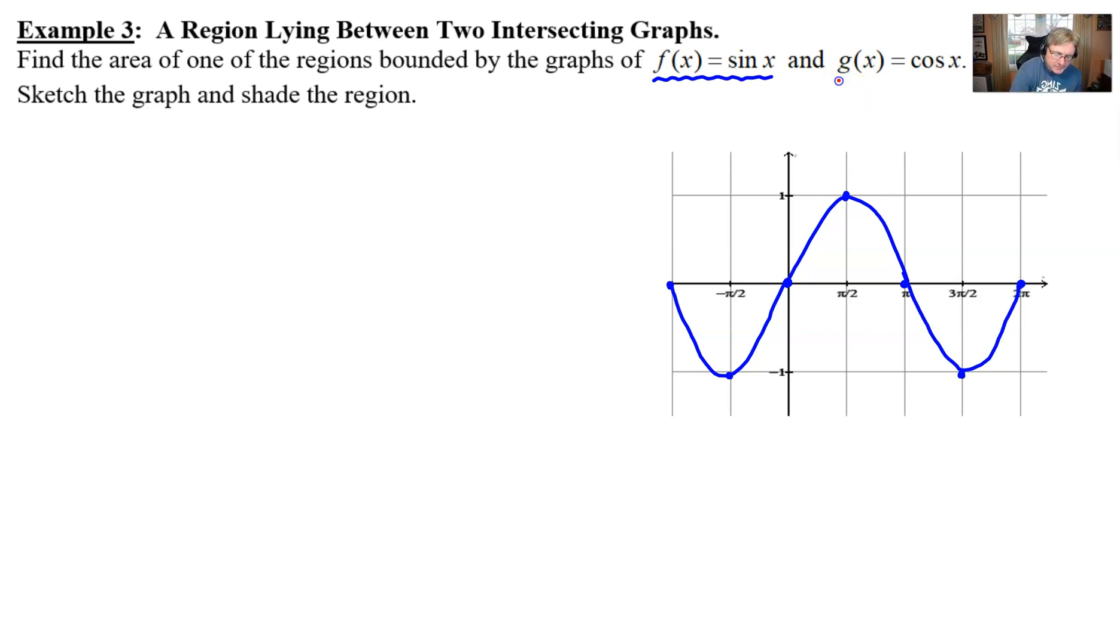We'll do the same thing with our cosine. This example also reviews the graphs of sine and cosine, which sometimes can be forgotten. Cosine starts at the point (0,1), then we have a zero at π/2, a minimum at π, a zero at 3π/2, and a maximum at 2π. On the other side, we cross the x-axis at -π/2 and reach a minimum at -1. The graph of cosine looks like this.